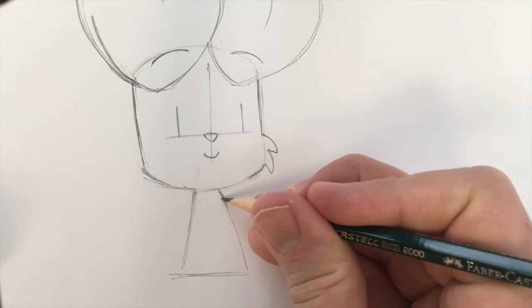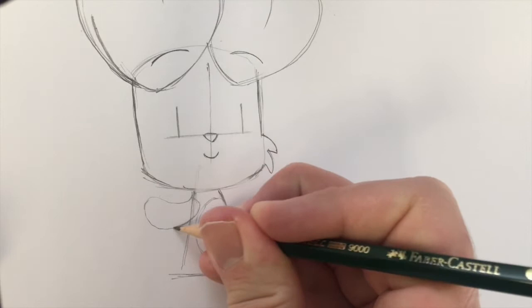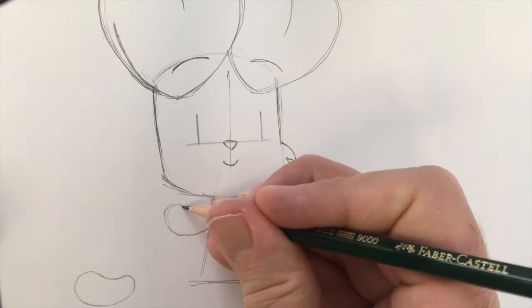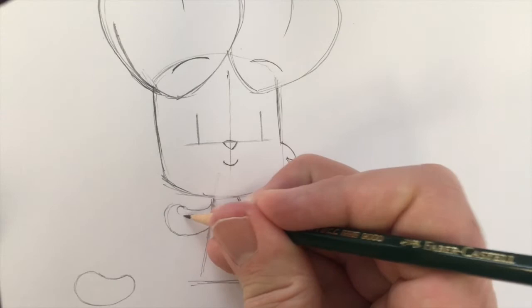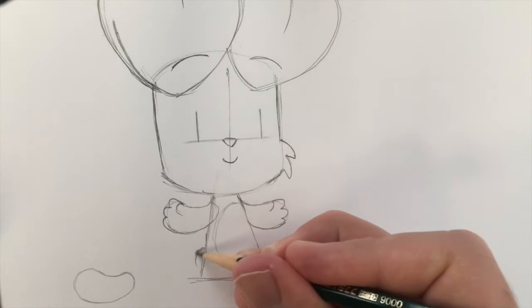Tuft of stomach fur. Arms which are kind of like sausage shapes. Obviously I've drawn my sausages a bit fat at one end, thin at the other. Thumbs, fingers, thumbs, fingers.